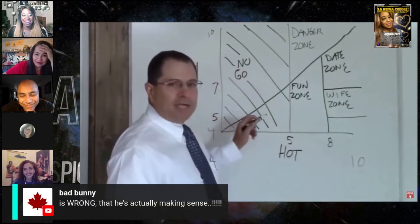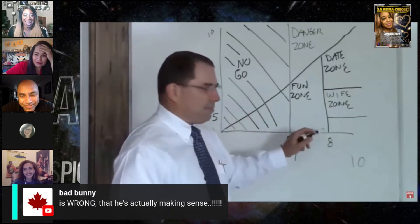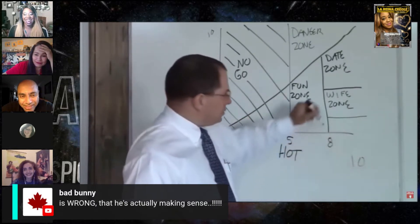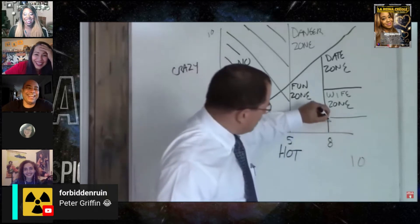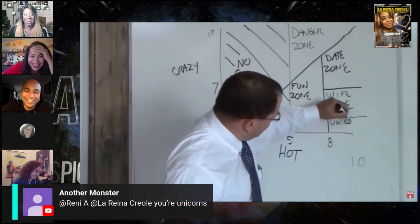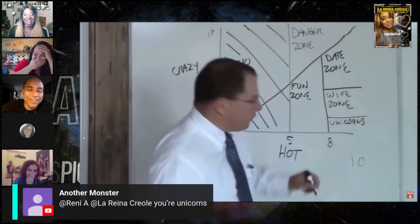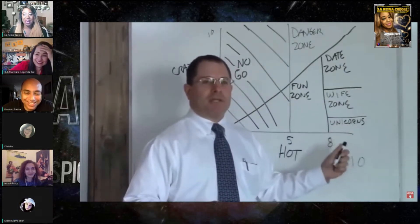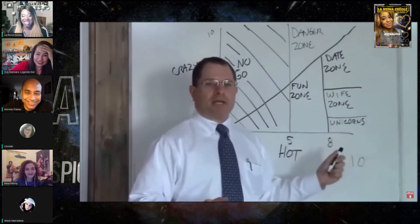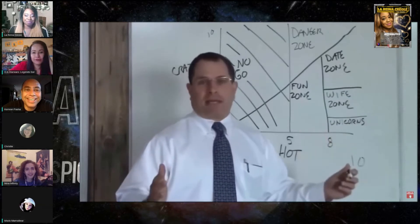Now below a five crazy and above an eight hot, this is your unicorn zone. This is the Victoria's Secret model that's going to be a good wife and mother. We'd like to study it and maybe look at how to replicate that.